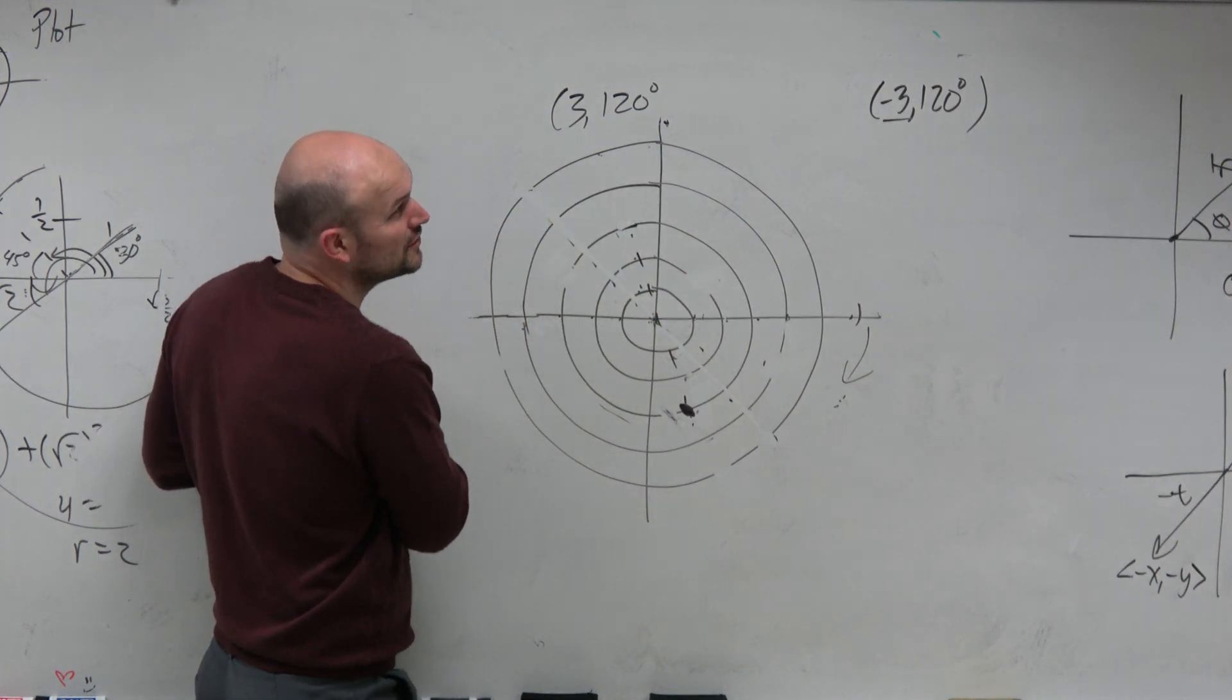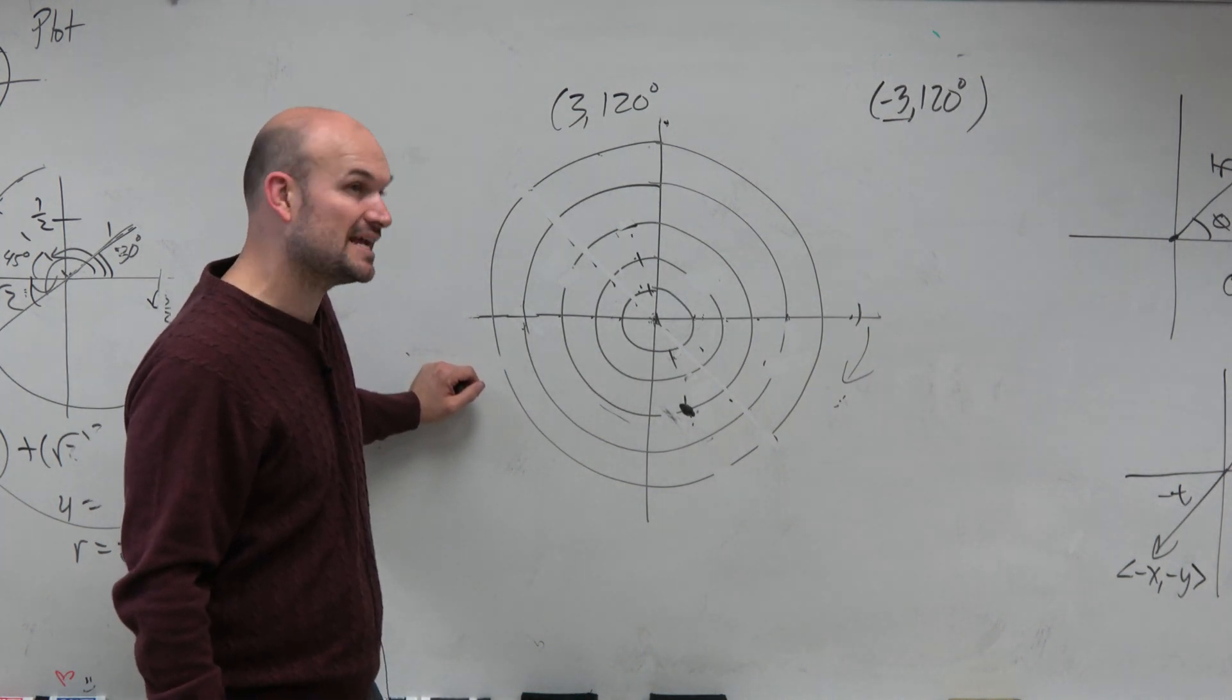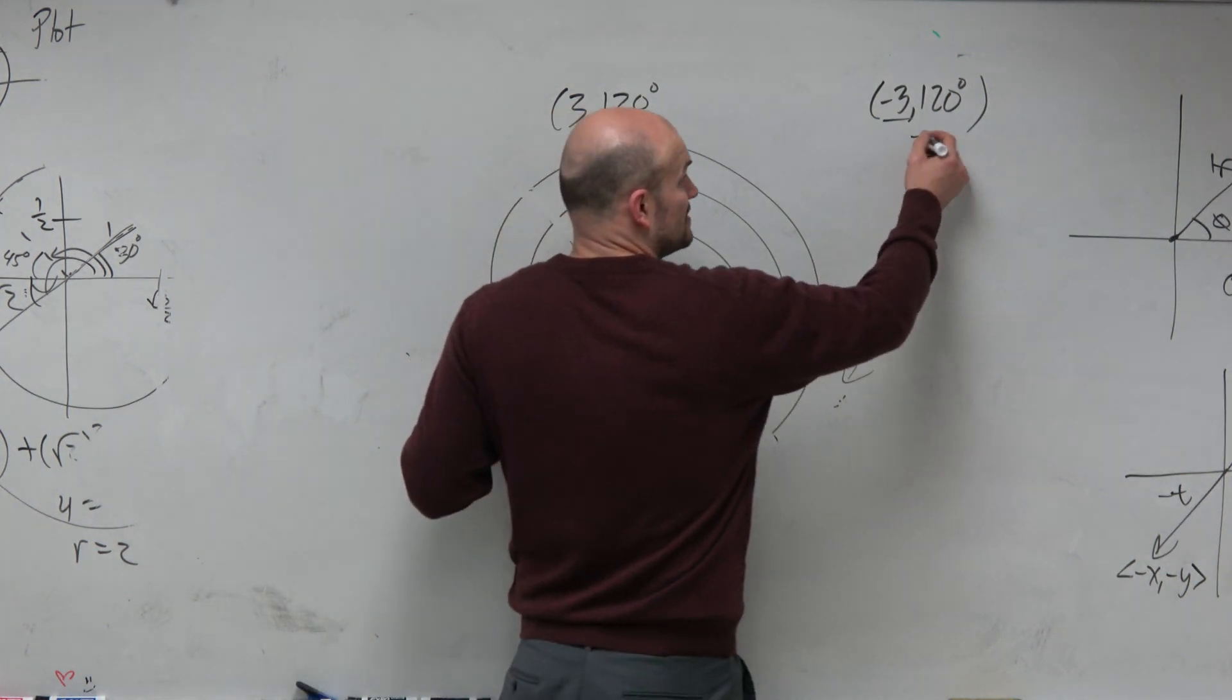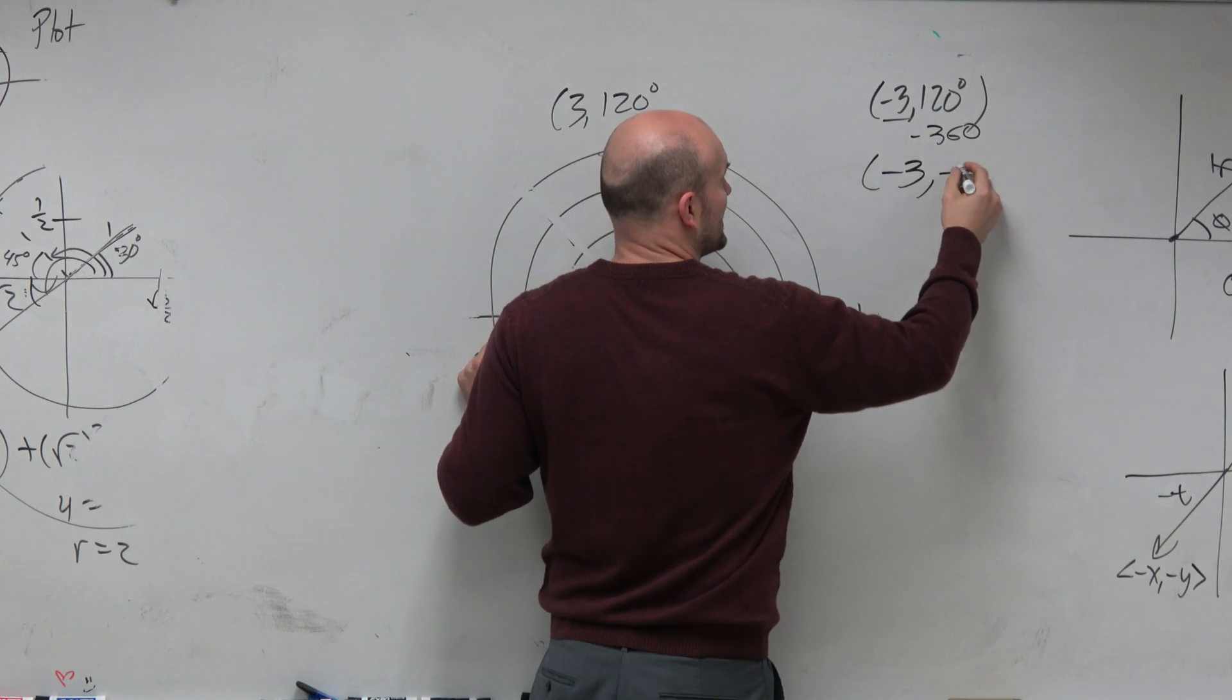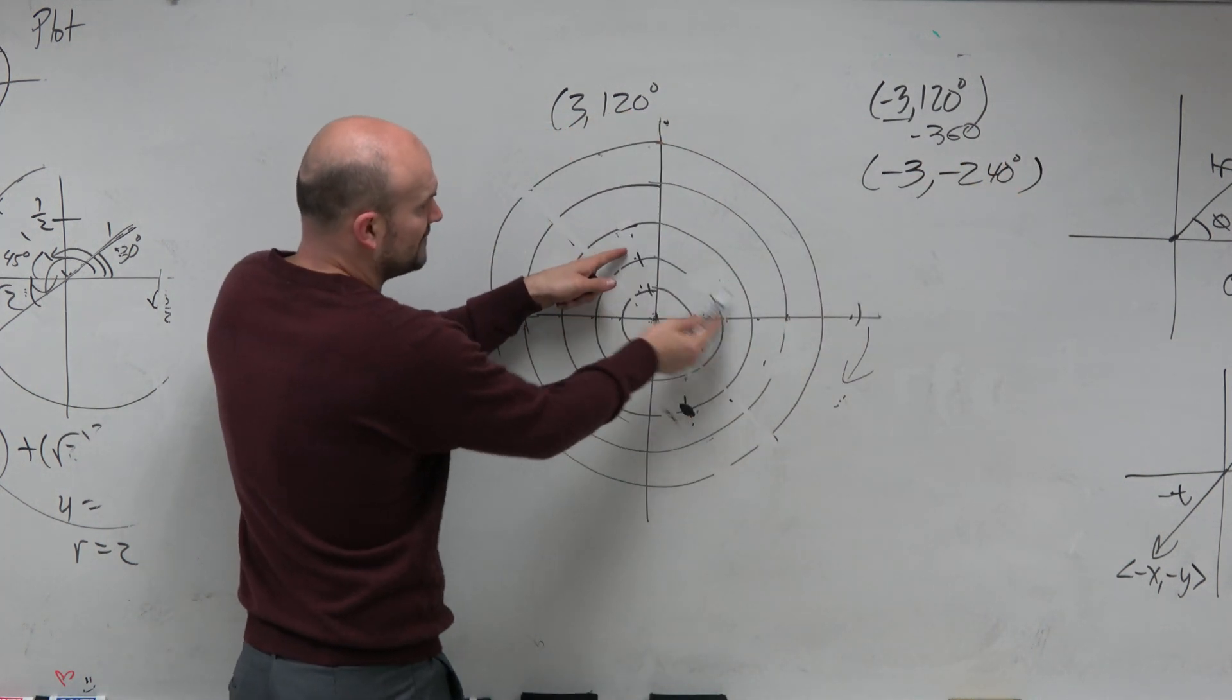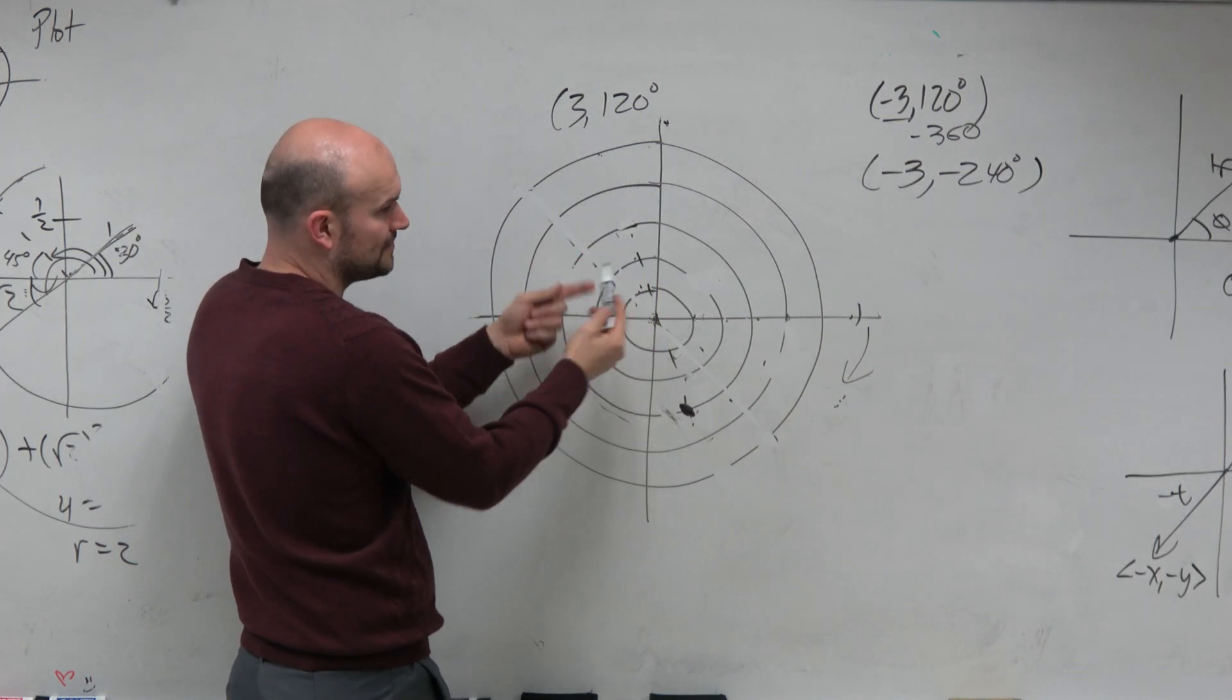No, that would give you 480. That's larger than 360. Right? Remember, my restriction is between negative 360 and positive 360. So what I have to do is subtract 360. And I could do negative 3, comma, negative 240. Because doesn't negative 240 give you the same thing as 120? Right? Yeah. So that one works.